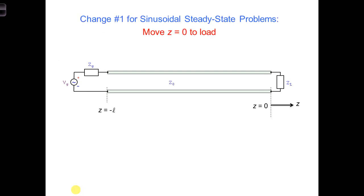For convenience, it is helpful to make two changes to our coordinate system when we're dealing with a sinusoidal steady state. First, it turns out that it is helpful to move the origin of the coordinate system